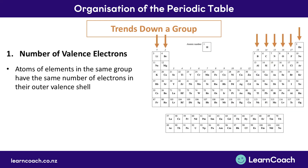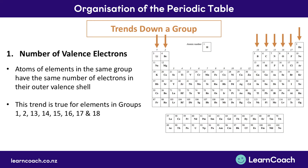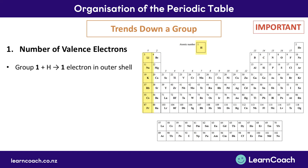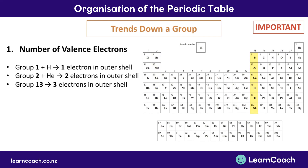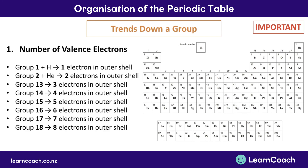First we're going to look at the number of valence electrons as you move down a group. Atoms of elements in the same group have the same number of electrons in their outermost valence shell. This trend is only true for elements in groups 1, 2, and 13 through to 18. Group 1 elements and hydrogen have one electron in their outer shell; group 2 and helium have two; group 13 has three; group 14 has four; group 15 has five; and so on.